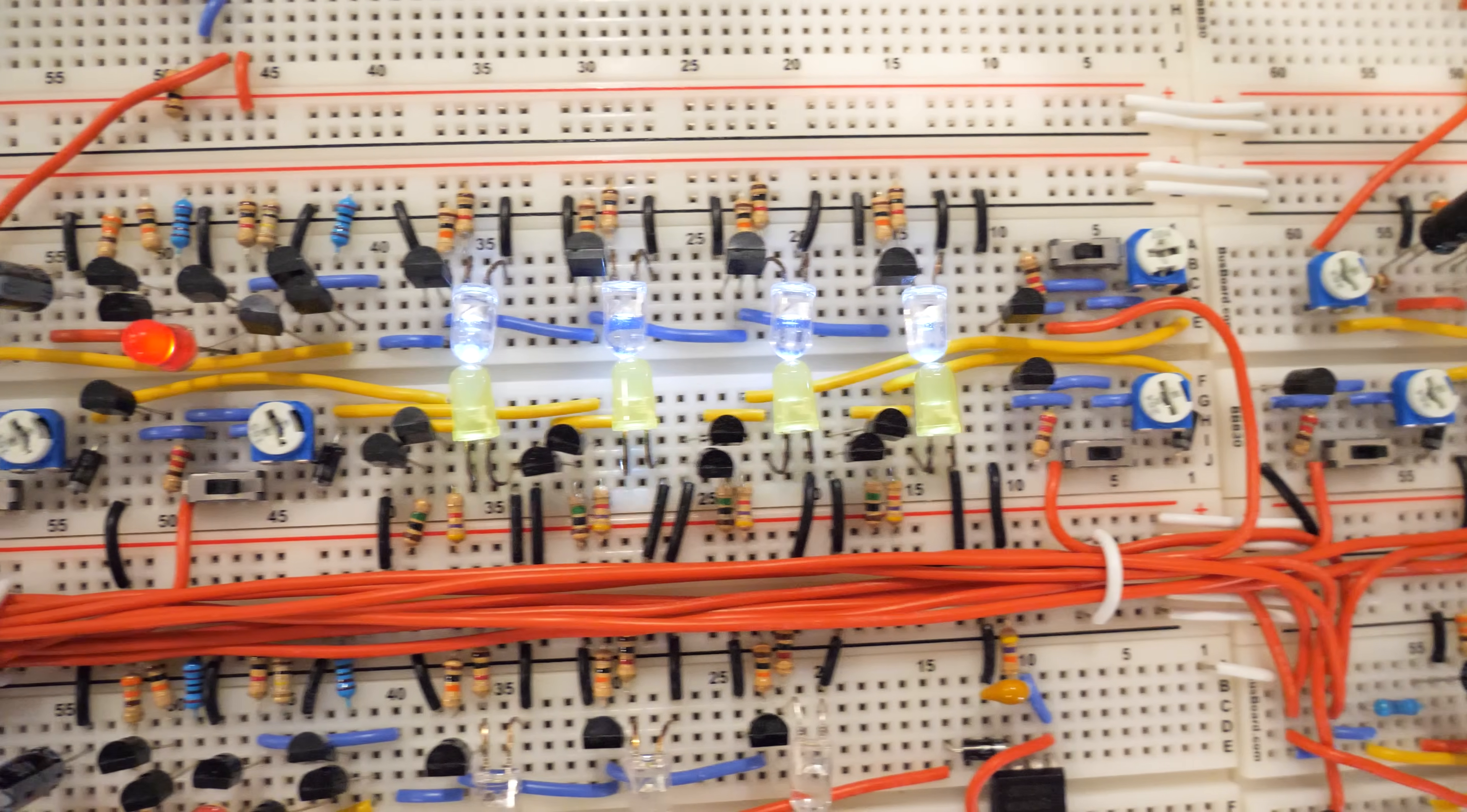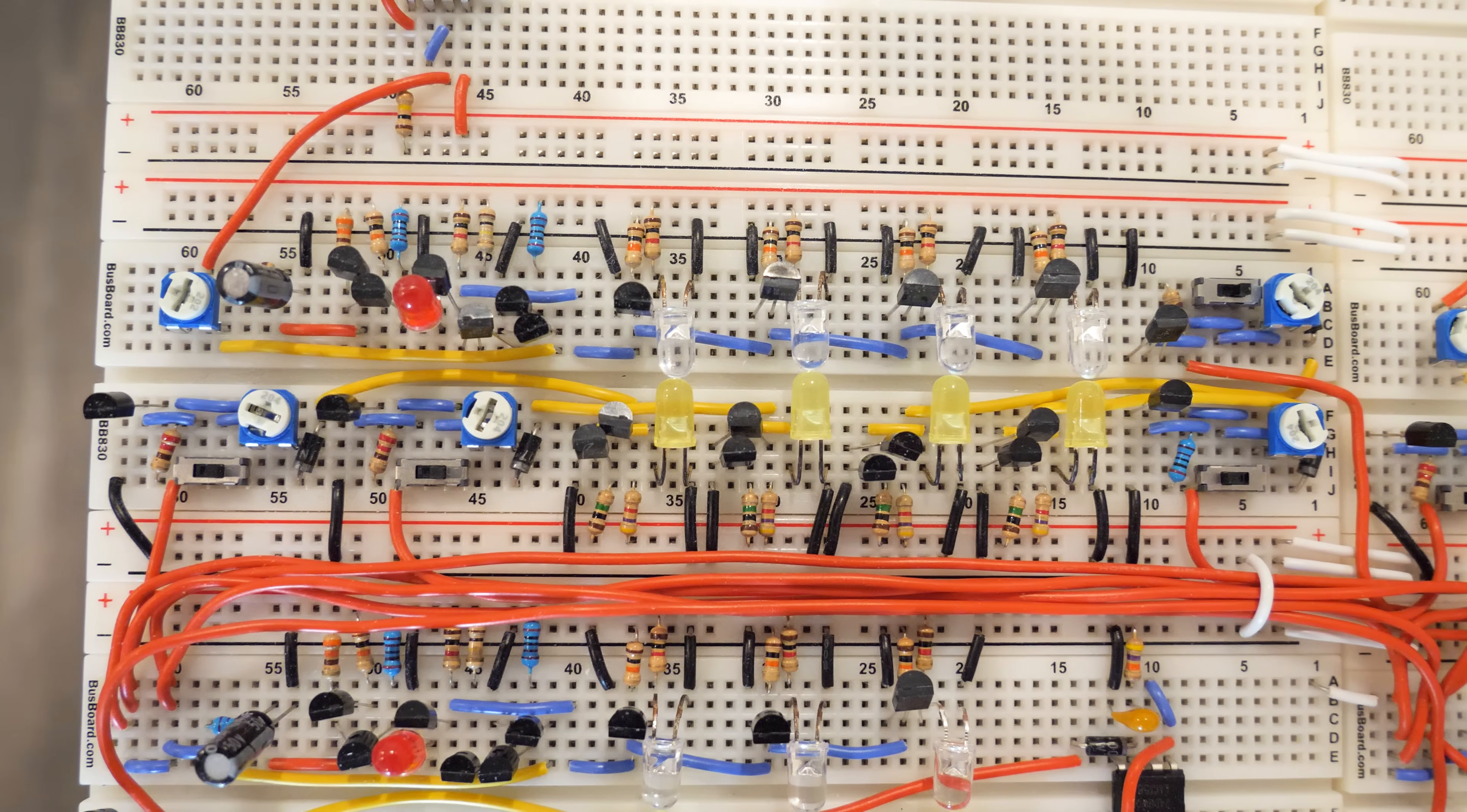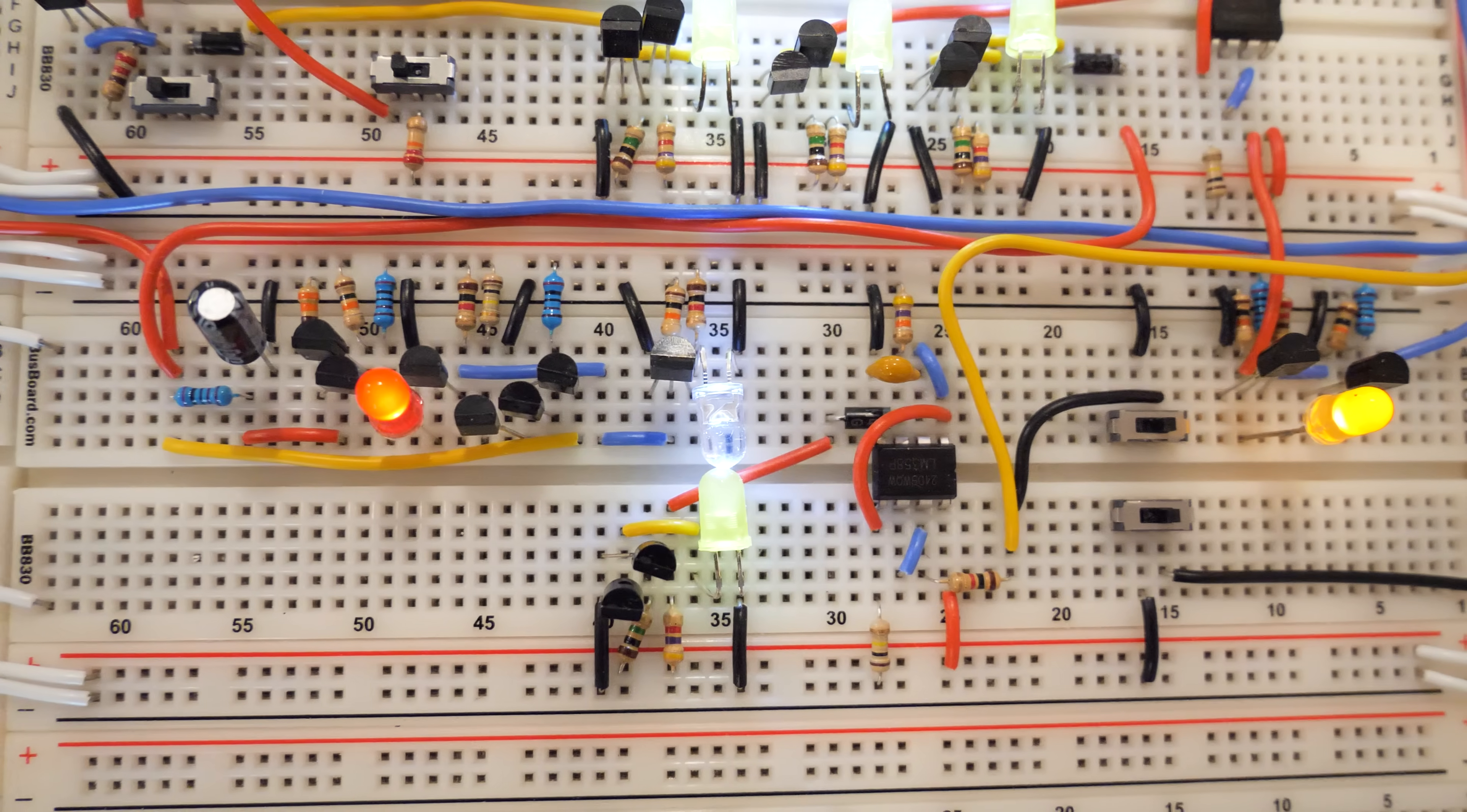Over time, the network would achieve improved control and hopefully even achieve better control than manually adjusting the weights. Once we have neurons in the network that can do this, scaling up the design for other tasks would be fascinating.